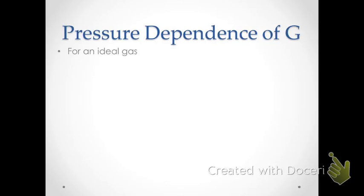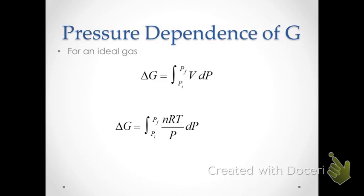For gases, this is a different situation. For an ideal gas, we cannot make the assumption that volume is independent of pressure. Instead, we substitute the ideal gas law for volume into the equation. Doing the integration assuming constant temperature, we end up with a simple relationship for delta G for the pressure change for an ideal gas.